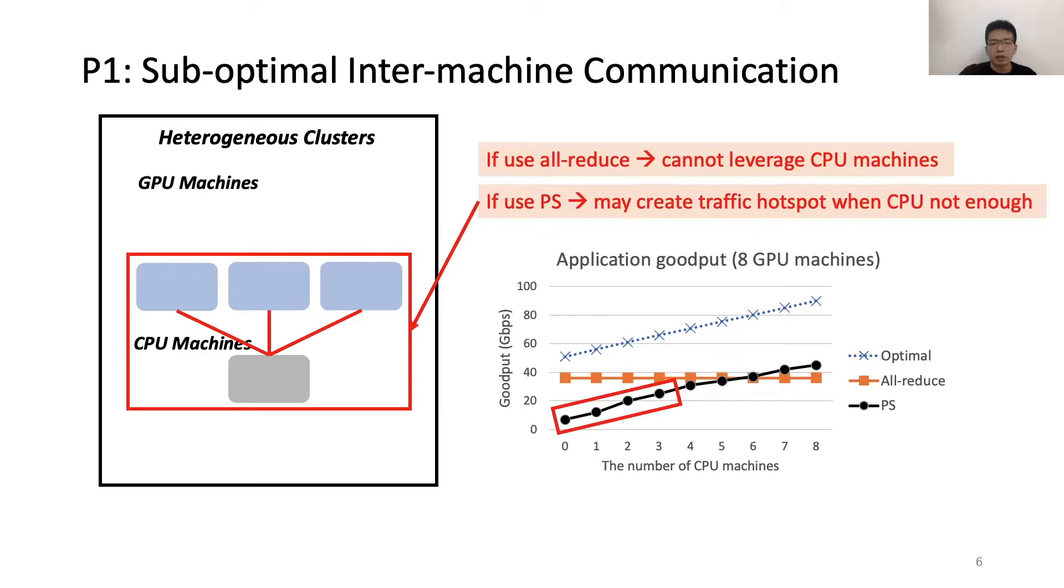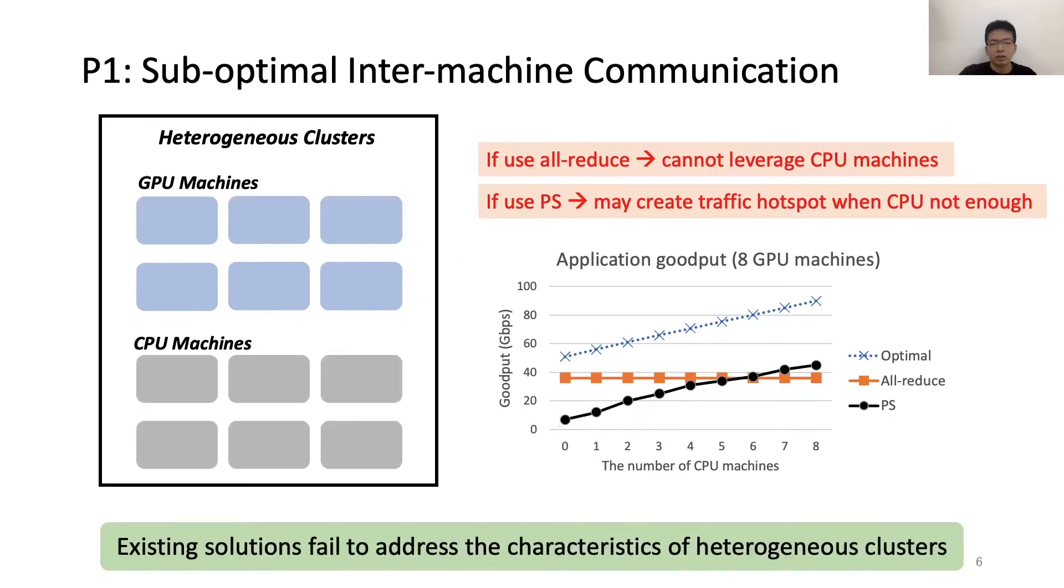Then, if we use PS, it may create traffic hotspot if there are insufficient CPU machines, and the application goodput is very low. So we find that existing solutions fail to address the characteristics of heterogeneous clusters.